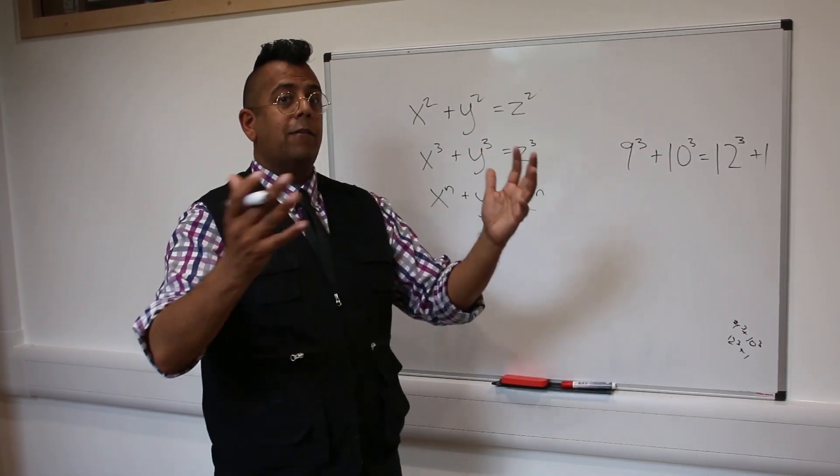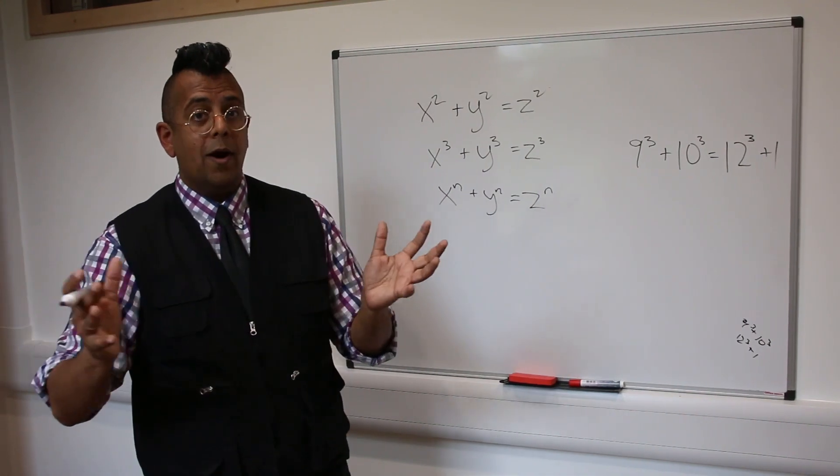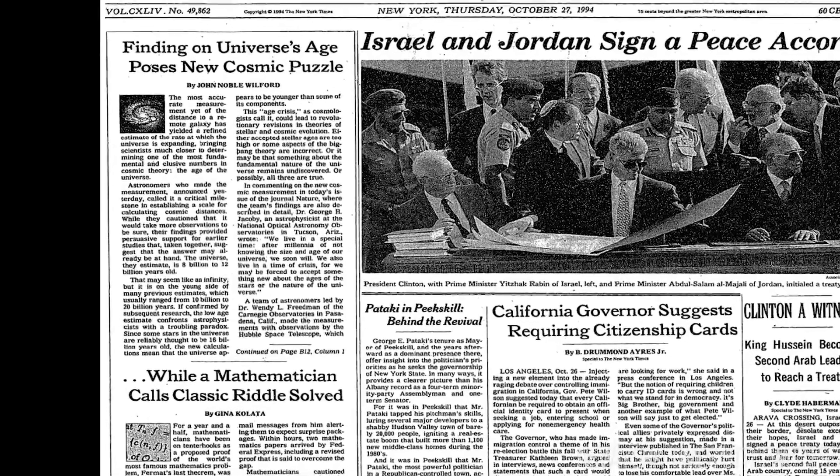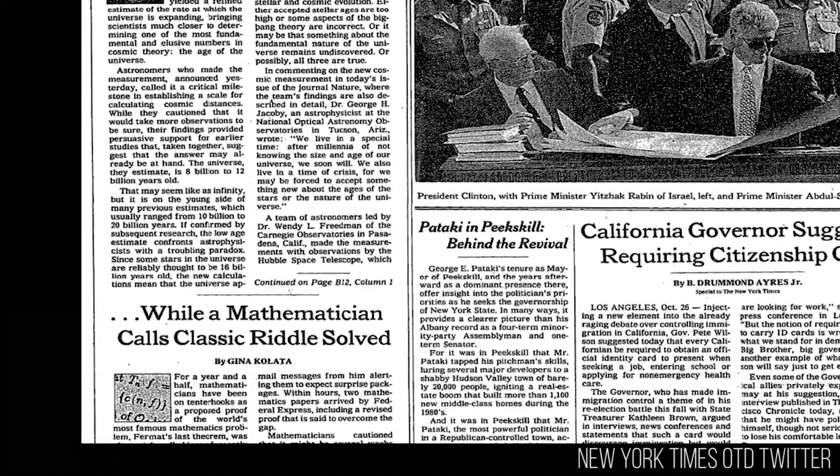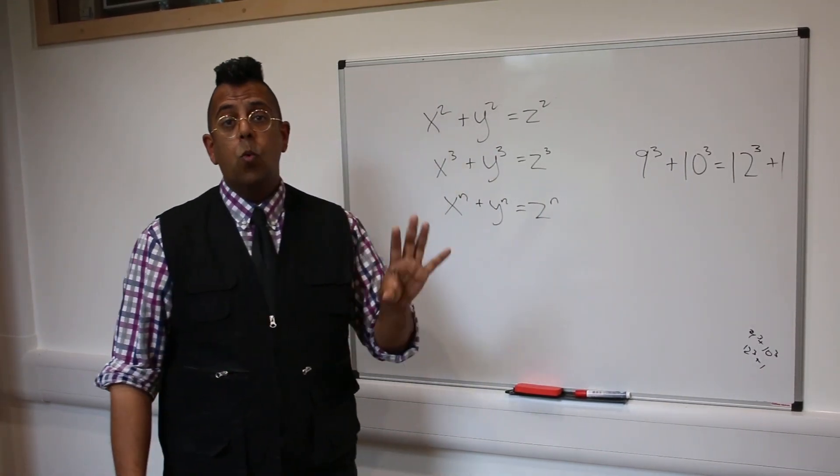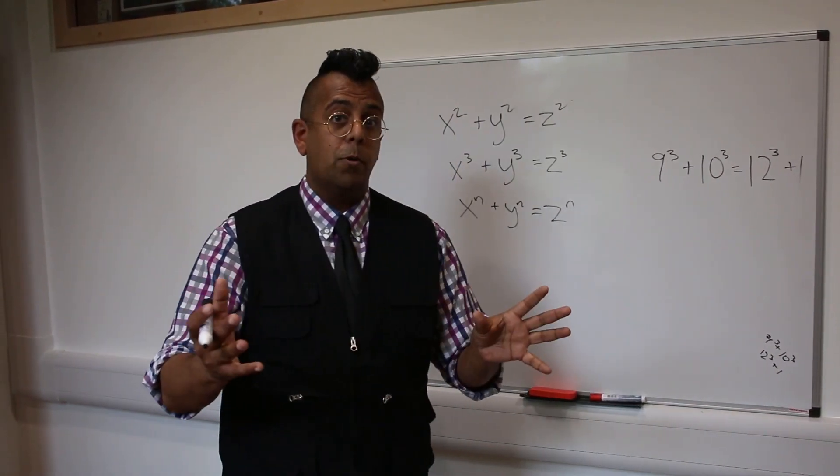And when he came here and he announced the proof, the world went wild. He was on the front page of the New York Times, he was interviewed on TV, he was everywhere. He was the world's most famous mathematician because he'd found a proof for the world's most notorious problem.